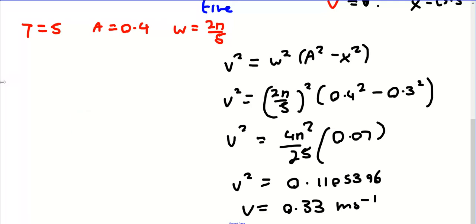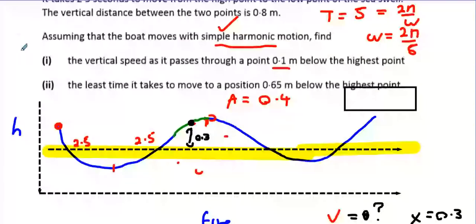Let's have a look at the next part then. The least time it will take to move from a position 0.65 below the highest point. What we're going to do is use this formula: x = A cos(ωt).